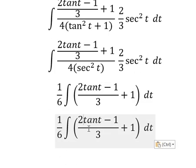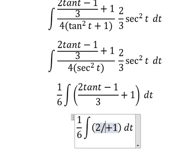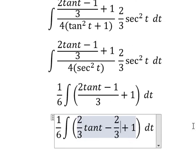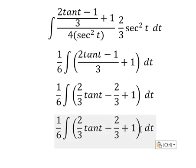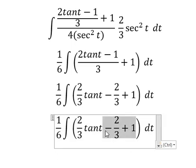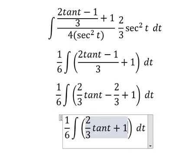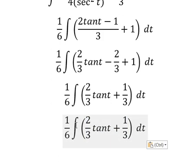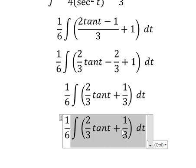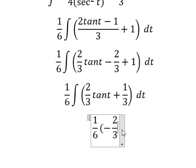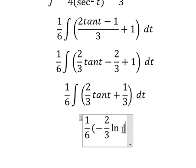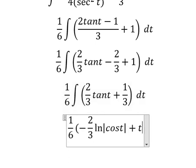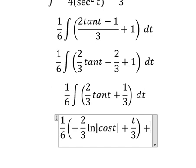So this one that is about two over three times t, and we have two over three. So this one that is about positive one over three — the integral of tan(t) — that is about negative two over three times ln of the absolute value of cosine(t). This one that is about t, and I will put about C.